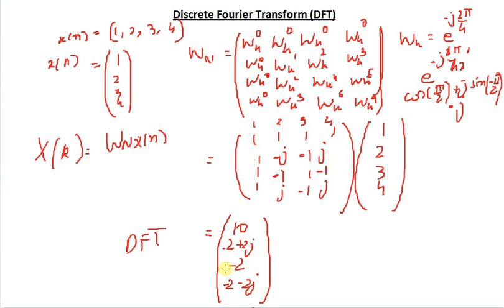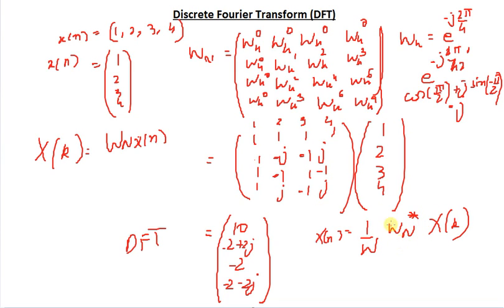We can compute the inverse DFT as well. To do that we use the formula: small x of n equals 1 over N times W sub N star times capital X of k. I won't do the computation — you can do this as an exercise. W star sub N is the complex conjugate matrix, so the minus j entries become j and the j entries become minus j. Multiplying by the DFT result should give back [1, 2, 3, 4].